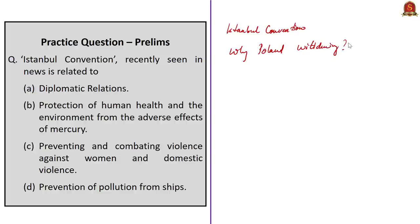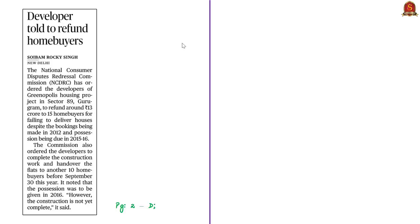That is all about this discussion. We saw about the European Treaty on Violence Against Women — the Istanbul Convention — why Poland wants to withdraw from it, and some international norms and treaties related to ending violence against women. Moving on to the next discussion based on a news article about the National Consumer Disputes Redressal Commission.